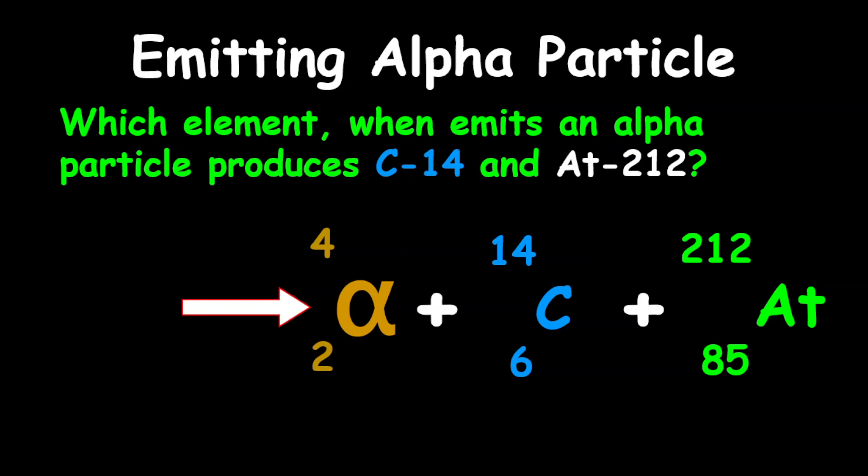To determine which element this is, we're going to add all the mass numbers. Therefore, 4 plus 14 plus 212 gives us 230. To determine the proton number, we're going to add all the proton numbers on the product side. Therefore, 2 plus 6 plus 85 gives us 93.